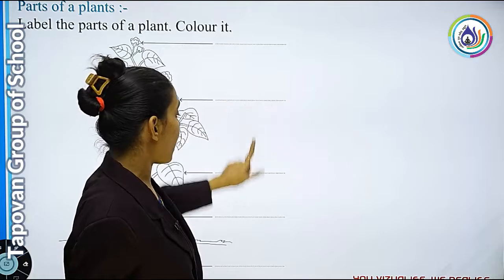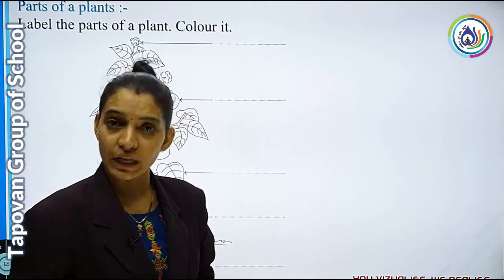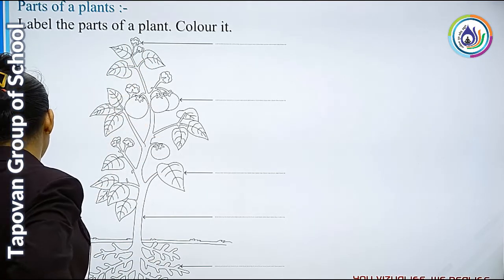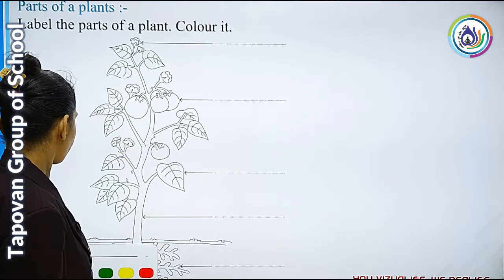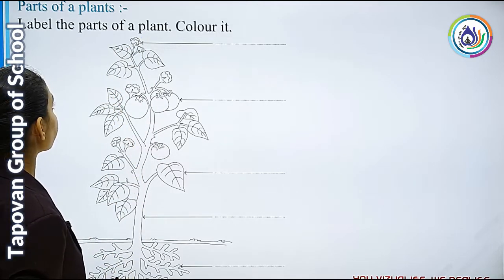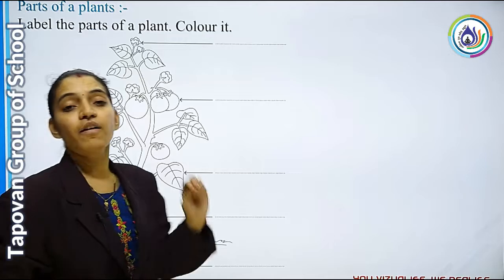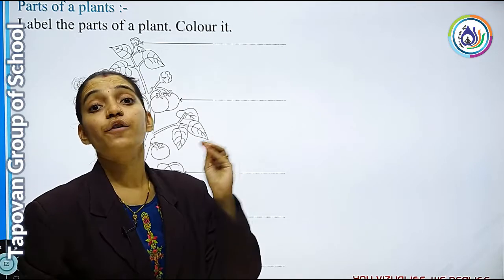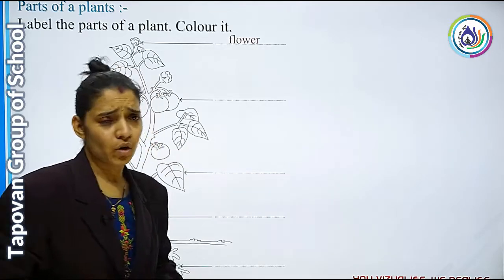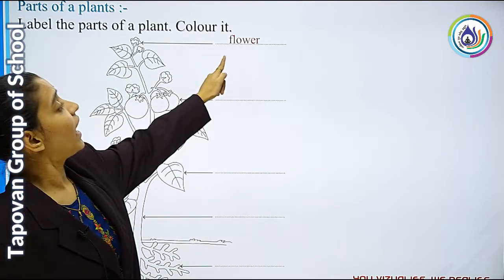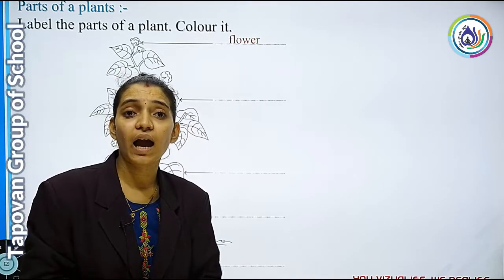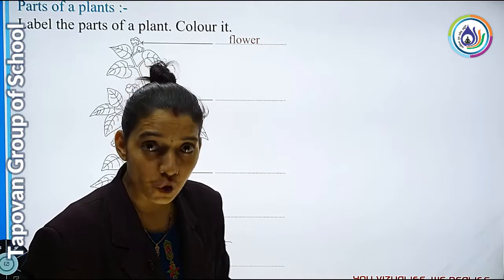First arrow आपको कहाँ पे दिखाई दे रहा है? तो First arrow यहाँ पे है. तो यह क्या है? तो यह है Flower, यानि कि Phool. उसका spelling क्या आएगा? F-L-O-W-E-R — Flower यानि कि Phool.